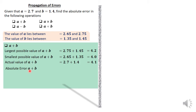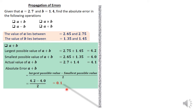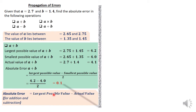The absolute error of A plus B is the largest possible value minus the smallest possible value divided by 2. That gives 4.2 minus 4.0 divided by 2, which equals 0.1. Alternatively, for addition and subtraction, the absolute error can be found by taking the largest possible value minus the actual value: 4.2 minus 4.1 equals 0.1. Likewise, 4.1 minus 4.0 also equals 0.1.